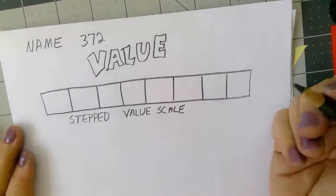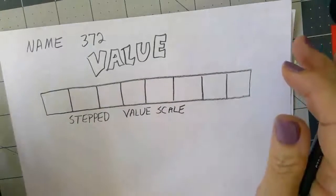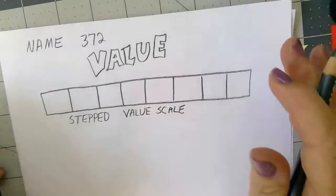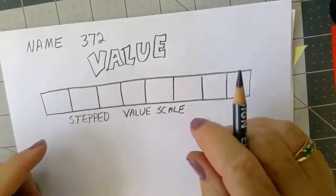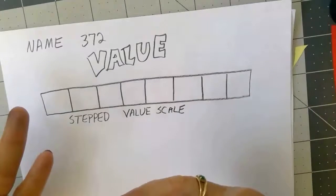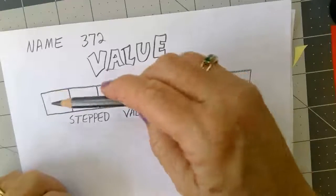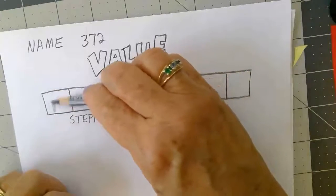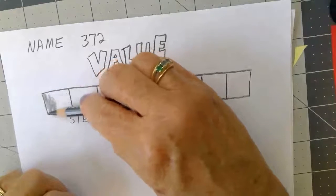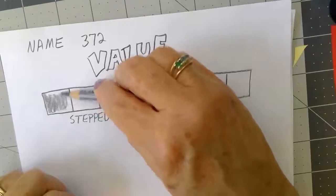The idea behind a stepped value scale is that one mistake that beginners make is they will have dark, medium and light values and not much of a range in between. When we're learning about values we need to learn to make a range from the darkest dark to the lightest light. Also remember when we're doing values we want to be way back on our paper and just buffing the paper with the side of the point of the pencil.